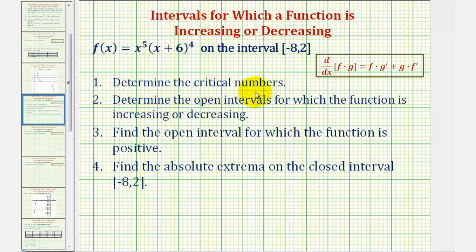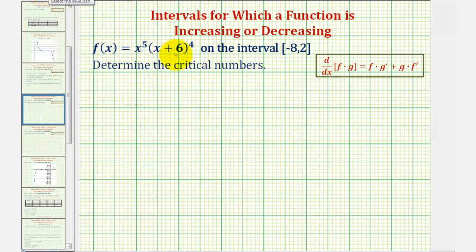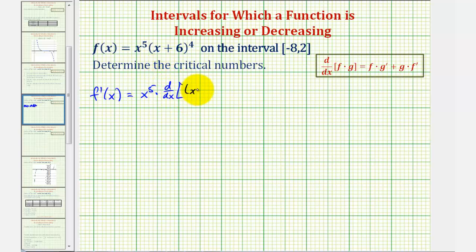We'll begin by determining the critical numbers, which is where the first derivative will be equal to zero or undefined. So begin by finding the derivative function. Notice how we have to apply the product rule, where f prime of x would be equal to the first function, x to the fifth, times the derivative of the second function, which would be the derivative of the quantity x plus six raised to the fourth, plus the second function, the quantity x plus six to the fourth, times the derivative of the first function, which would be the derivative of x to the fifth.